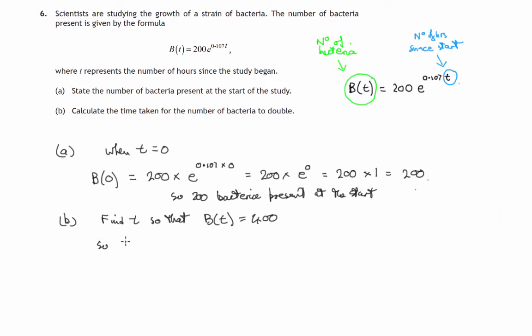Let's plug that in. 400 is on the left of this equation, and we've got 200 times e to the power 0.107 times t. Let's divide both sides first of all by 200. We'll get 2 equals e to the power 0.107 times t.